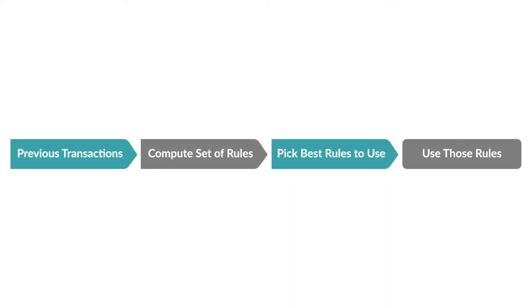In this flowchart, we start off on the left with our previous transactions. Next, we compute a set of rules. Then, we pick the best rules to use. And finally, we use those rules when we make our business decisions.